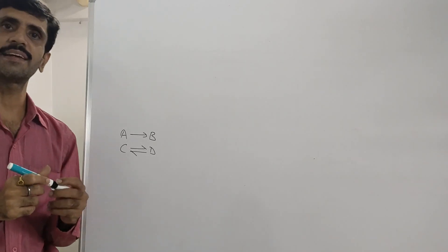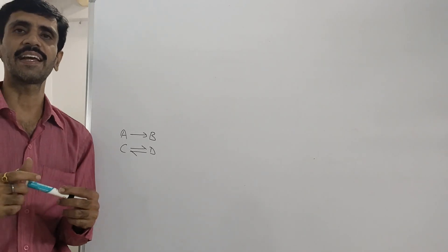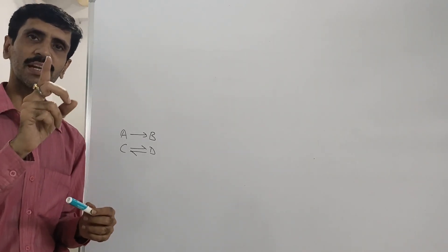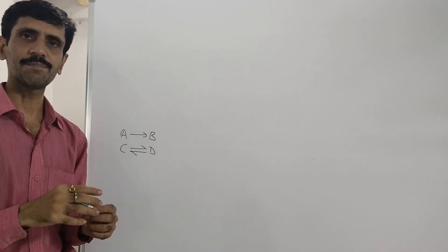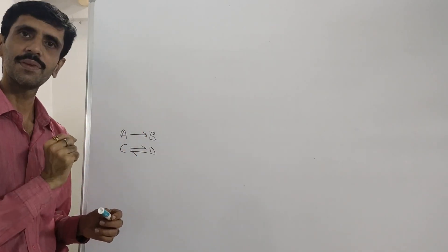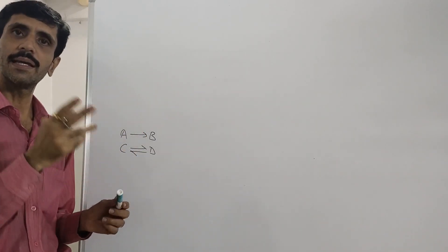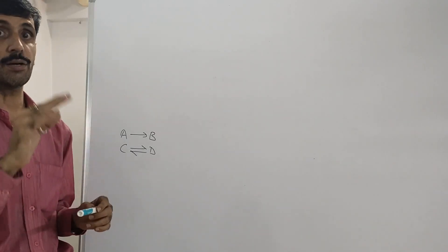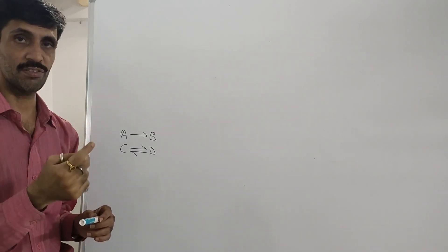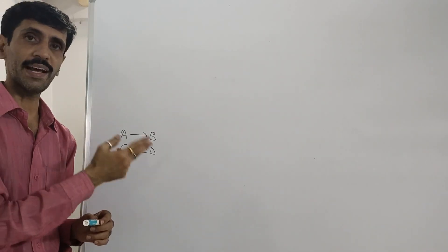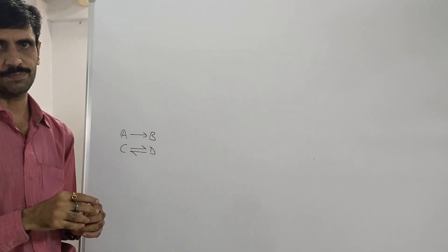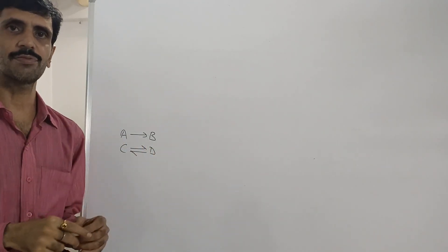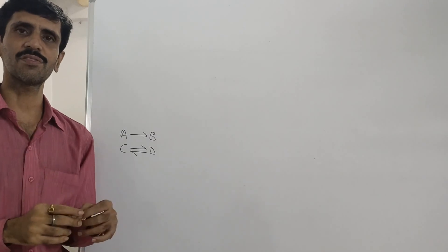The first point of difference is the directions. Irreversible has only one direction, and that is the forward direction. Reversible has two directions: forward as well as backwards. So that is the first point of difference. I guess everybody is very clear about this.